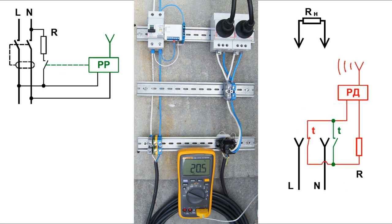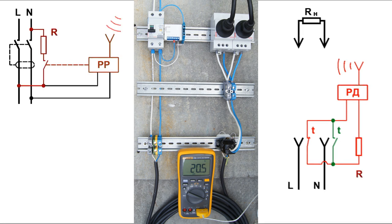I will briefly repeat that the contact closure, for example, when the socket of the phase conductor overheats, leads to the transmission of a radio signal. Receiver radio relay reacts to this signal by closing the resistor circuit. As a result, balance of RCBO currents is disturbed. It is triggered and power supply stops.